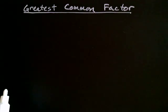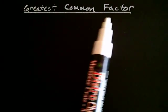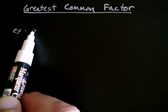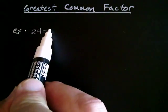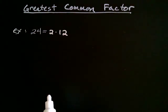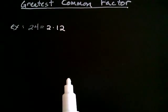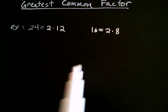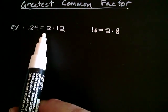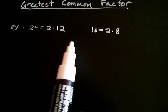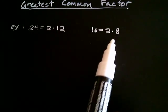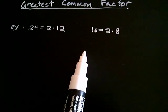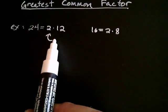In this video, we're going to talk about what it means to be the greatest common factor. Let's first note that 24 can be written as 2 multiplied by 12, and 16 can be written as 2 multiplied by 8. The fact that I've written 24 as 2 times something and 16 as 2 times something tells me that both 24 and 16 have a 2 in common as a factor. So the 2 is what we call a common factor.